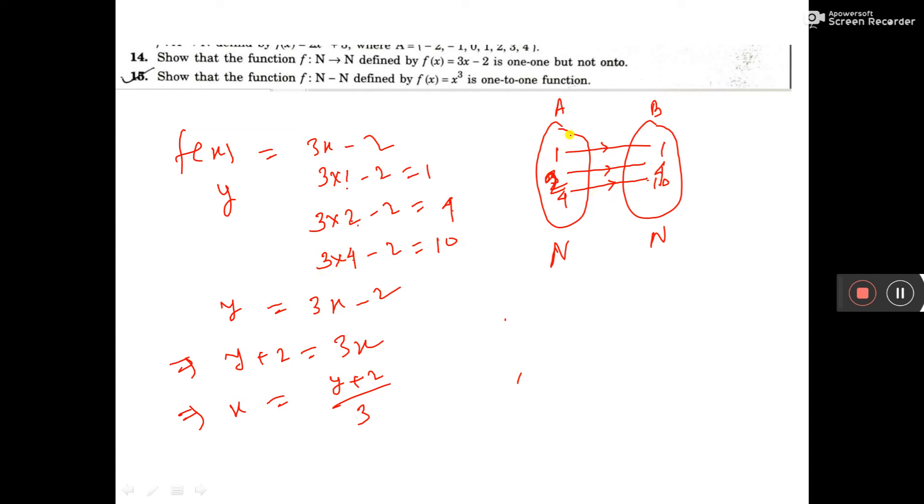For the first set X, the elements are 1 to 4, and the corresponding B set's values of Y are 1, 4, 10.